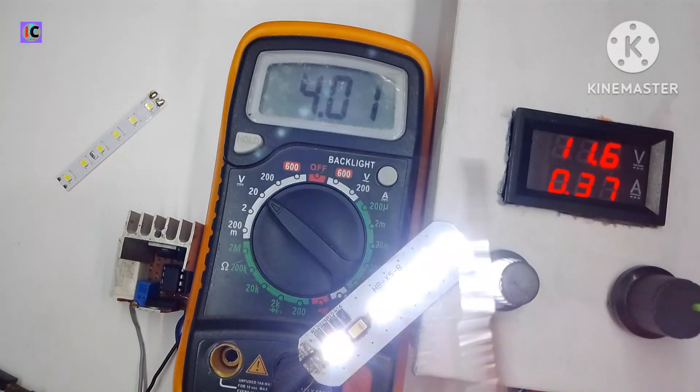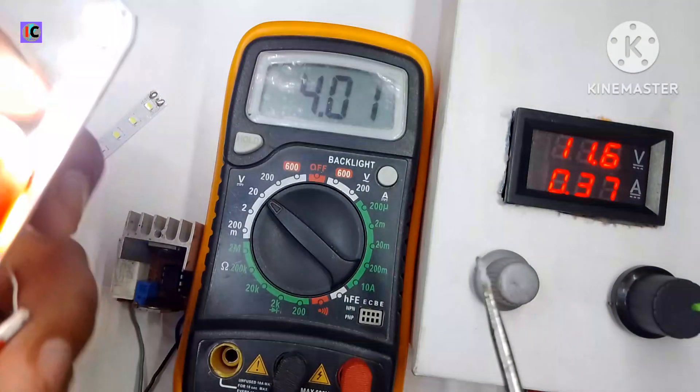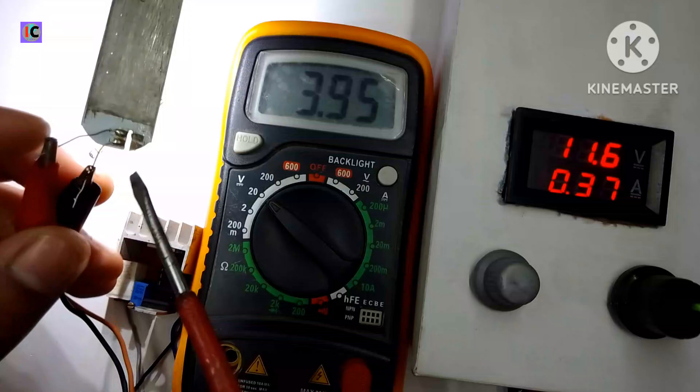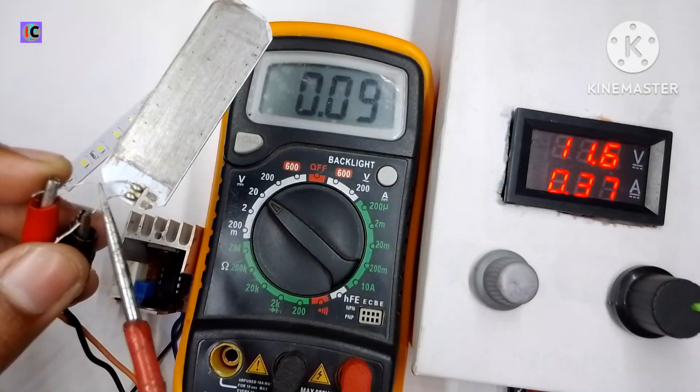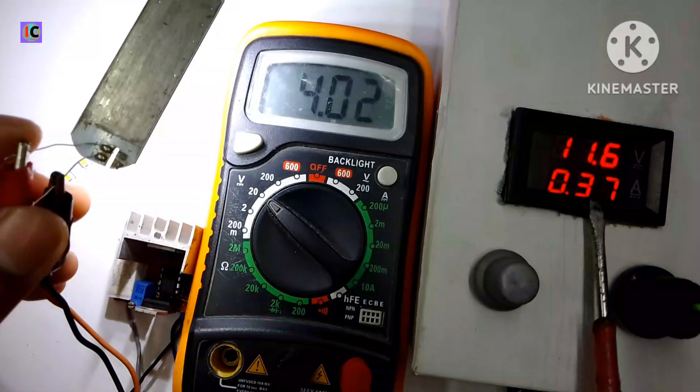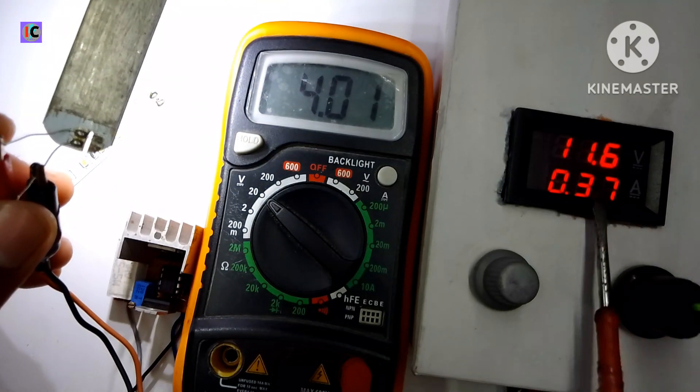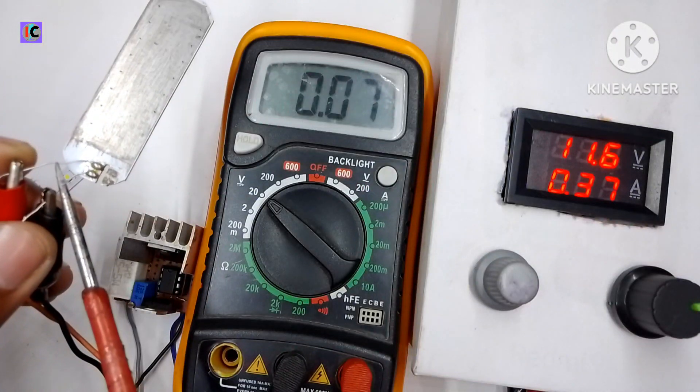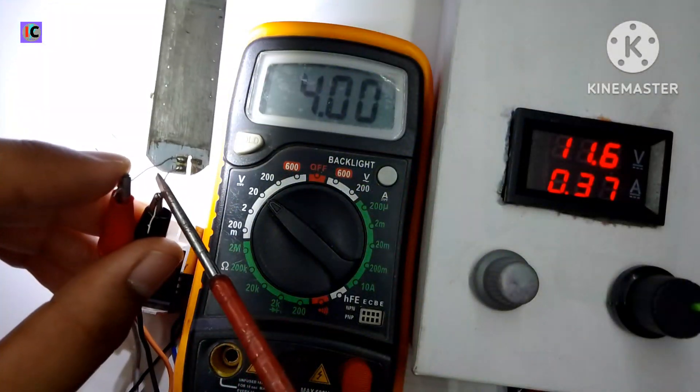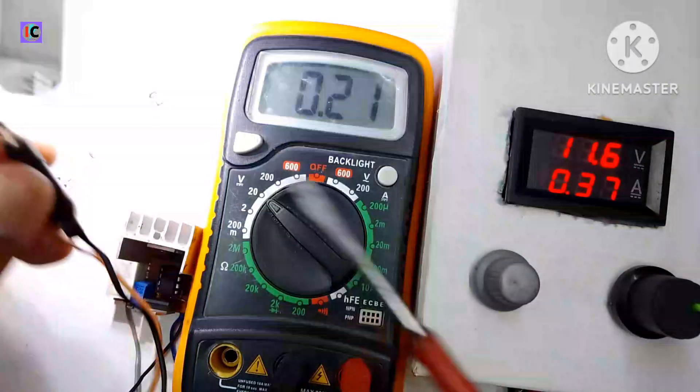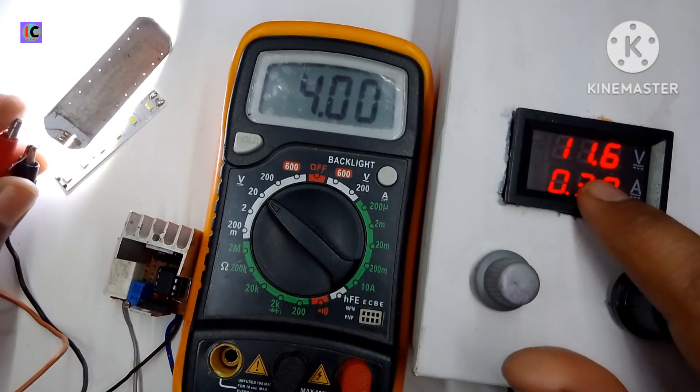Here you can see the voltage is 4 volts at the multimeter. When I short the LED terminals the voltage output drops, but in the power supply it's constant current so the current doesn't change even when I have shorted the output.